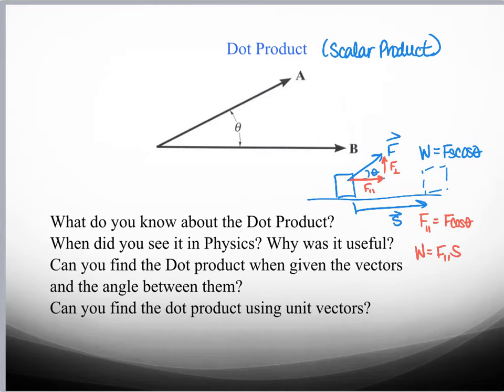In a more general way, when we think about the dot product, we can think about the fact that it's an operation that we do with two vectors. And when we're calculating it, we're really finding the product of one vector times the projection of the second vector onto the first. So, for instance, in this picture, I found A parallel, which is the projection of vector A onto vector B.